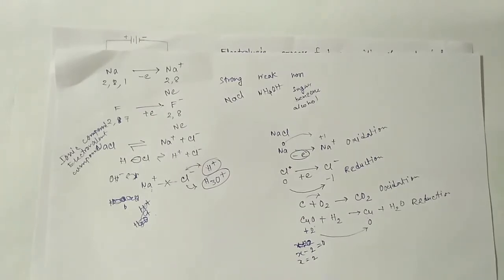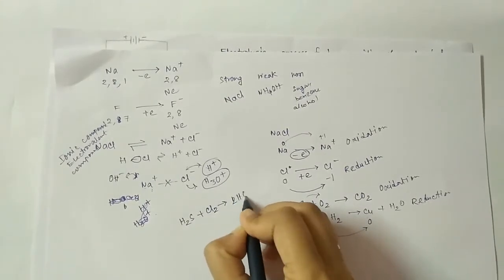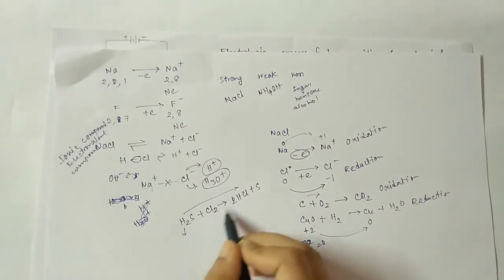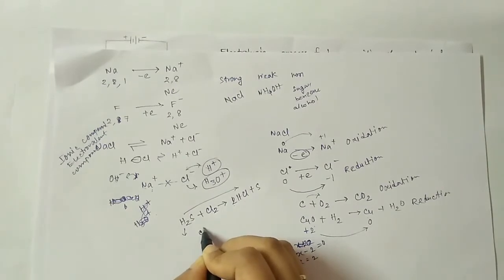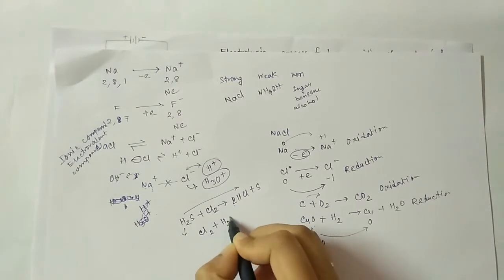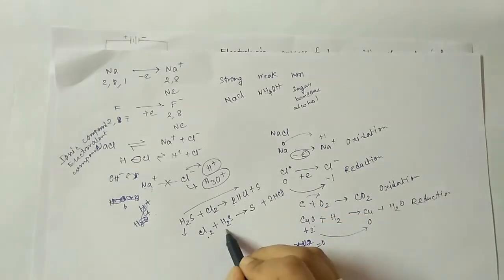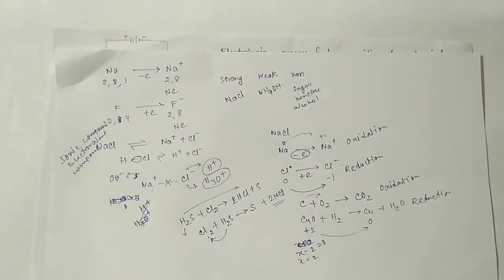Another definition: oxidation involves removal of hydrogen. For example, when Cl2 reacts with H2S, it produces 2HCl and sulfur - there is removal of hydrogen from H2S, so this is oxidation. Conversely, reduction involves addition of hydrogen. In the same reaction, chlorine gains hydrogen to form 2HCl, so that is reduction for chlorine. The concept of oxidation number is very important as it is the ultimate definition of oxidation and reduction.